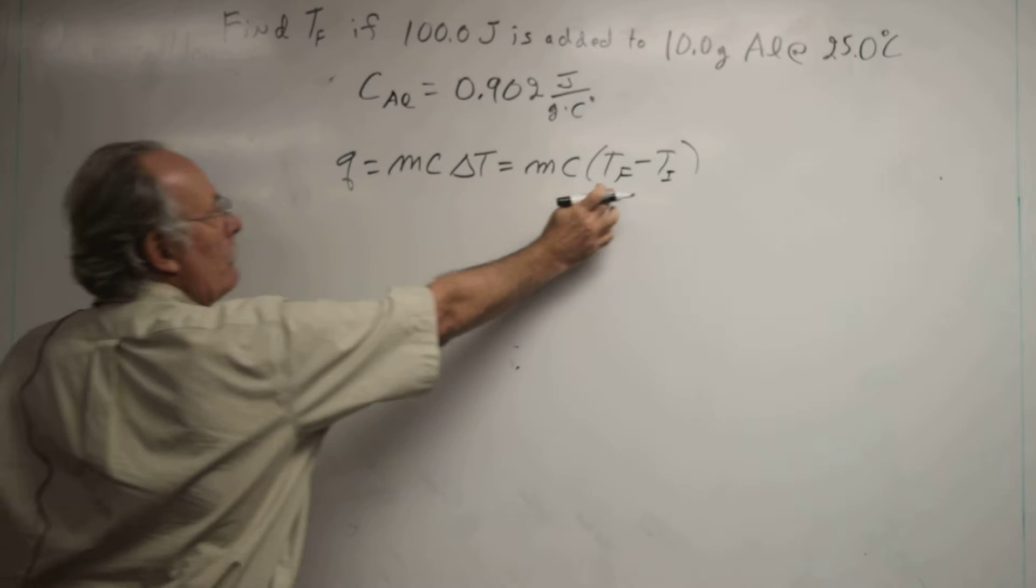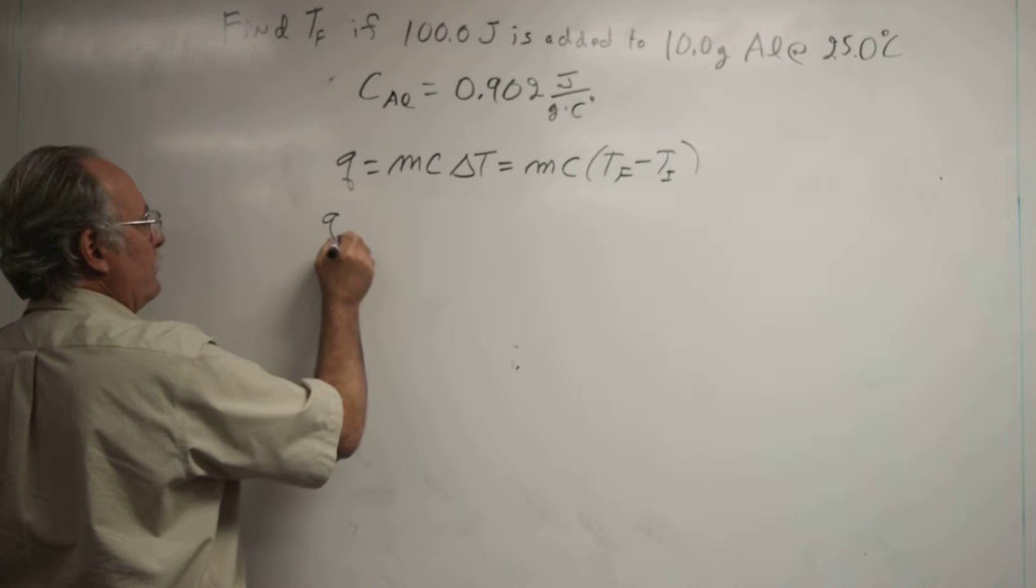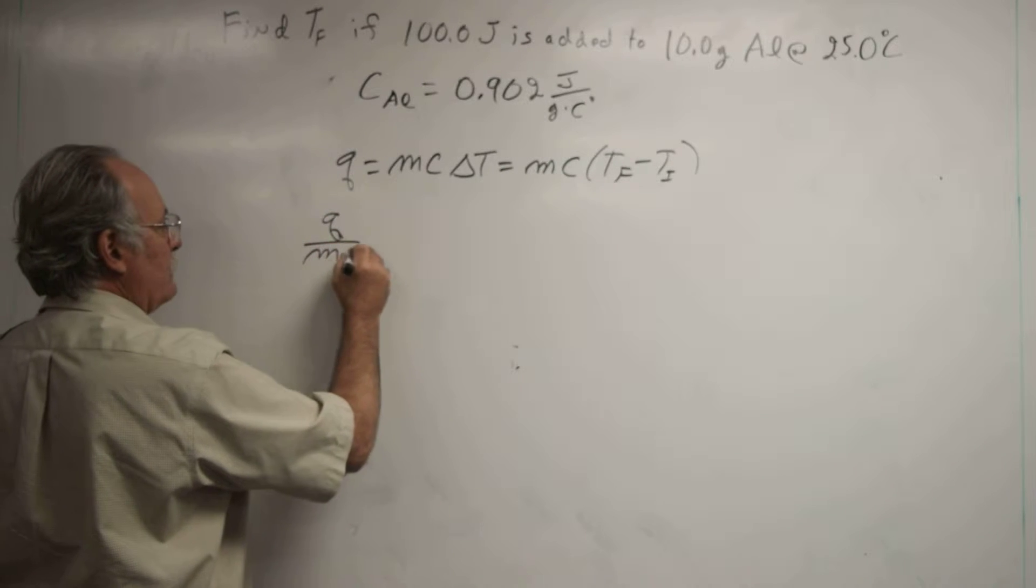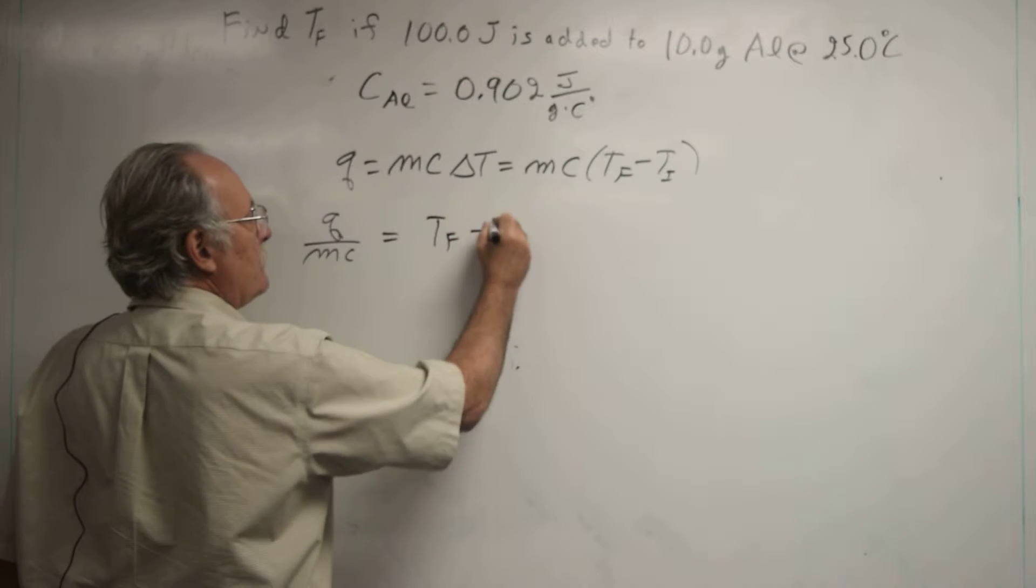Now we can solve for final temperature. First, divide by mc, so q/mc = Tf - Ti.